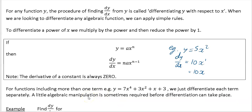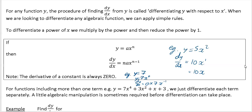For example, if y equals 7, you can write that as y equals 7x to the power of 0. Applying the rule, dy by dx equals 0 times 7, and x is now to the power of minus 1. It doesn't matter what x is to the power of, because 0 times anything is just 0. So when you differentiate y equals 7, you just get 0.